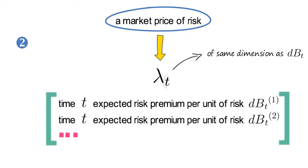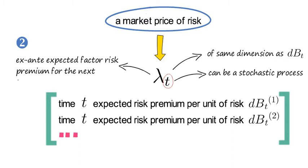The t index on lambda highlights that it can be a stochastic process. Now if you like to relate that to factor investing, you could say that lambda t is the ex-ante expected factor risk premium for the next trading interval.